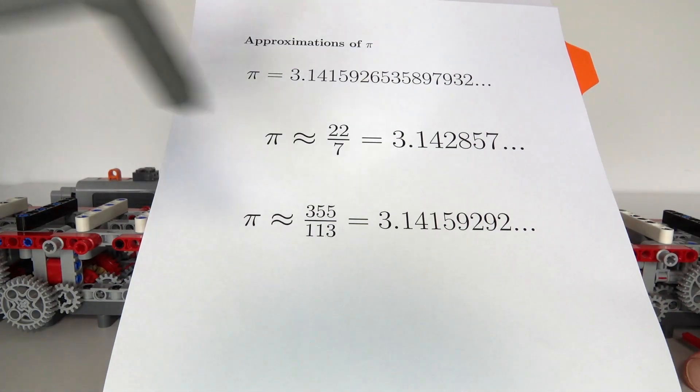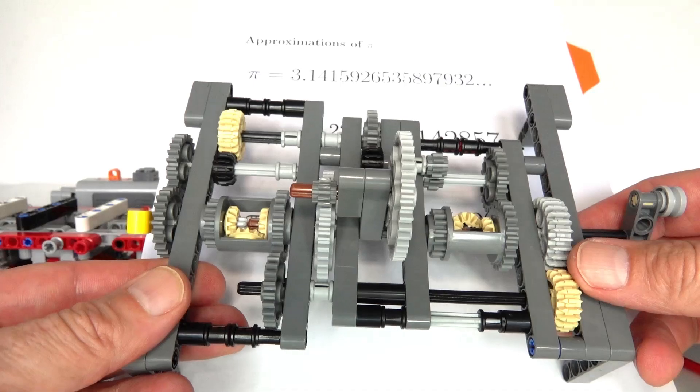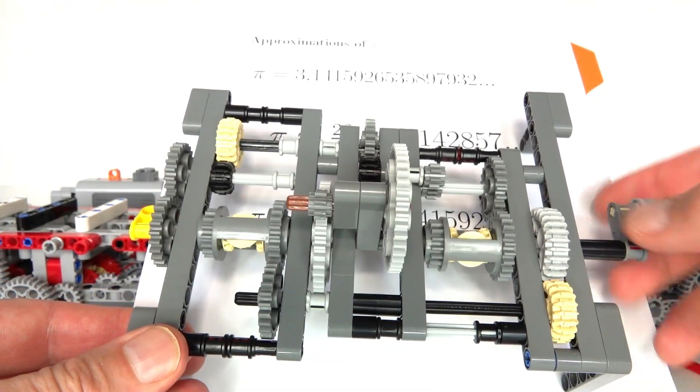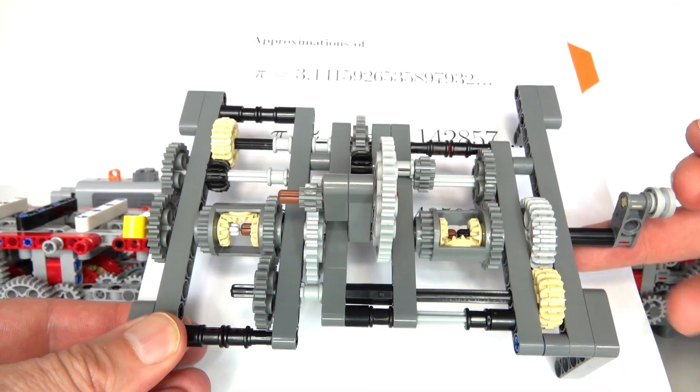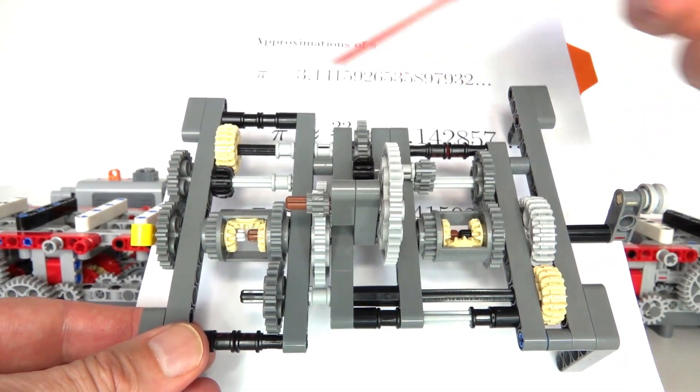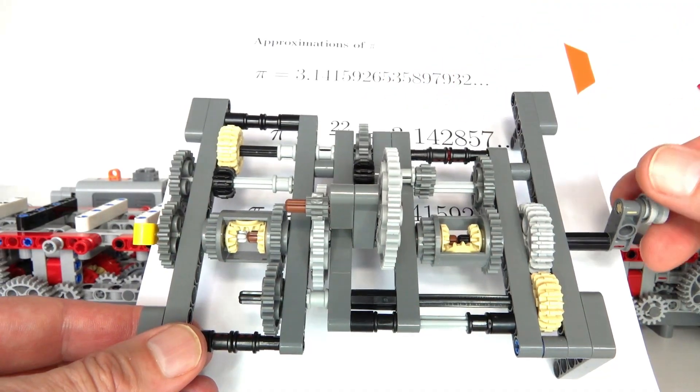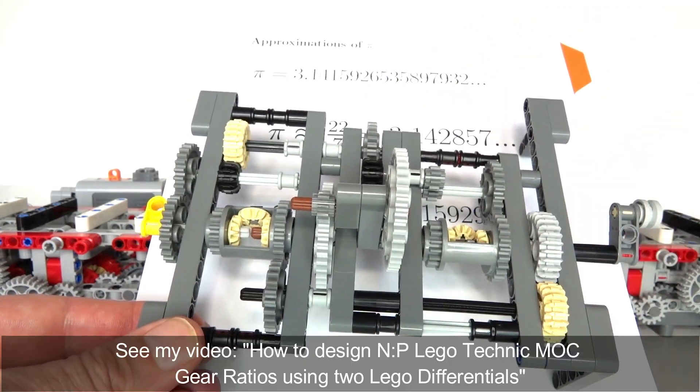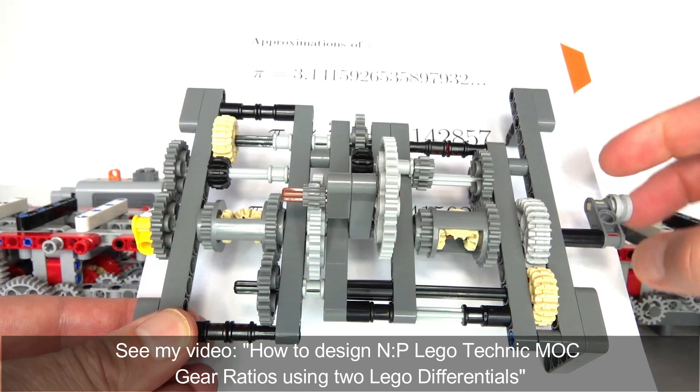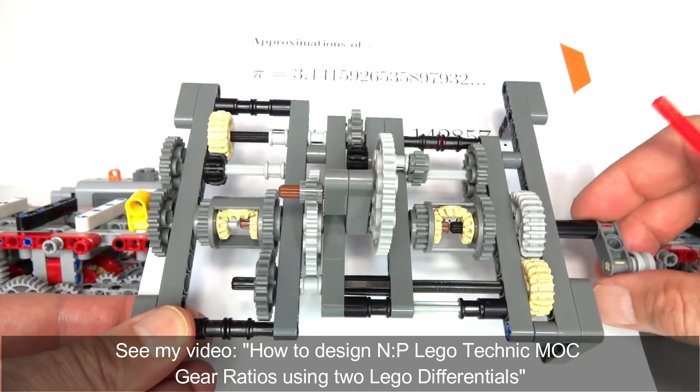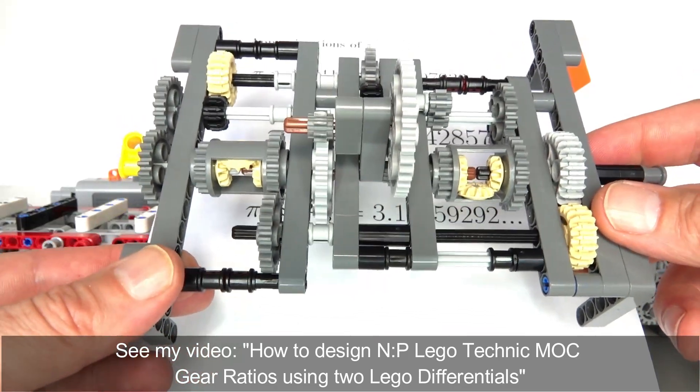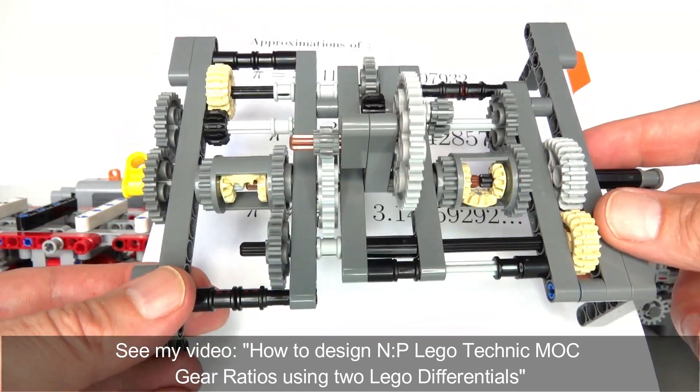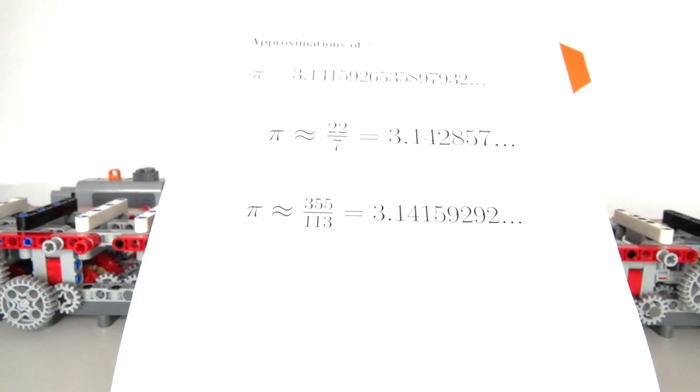I ended up implementing that in a two differential system like this, where I've created the ratio approximation of Pi given by 355 over 113 between this point and that point using two differentials. If you want to learn how to use differentials to create any kind of fraction, look up some of my videos on differentials.